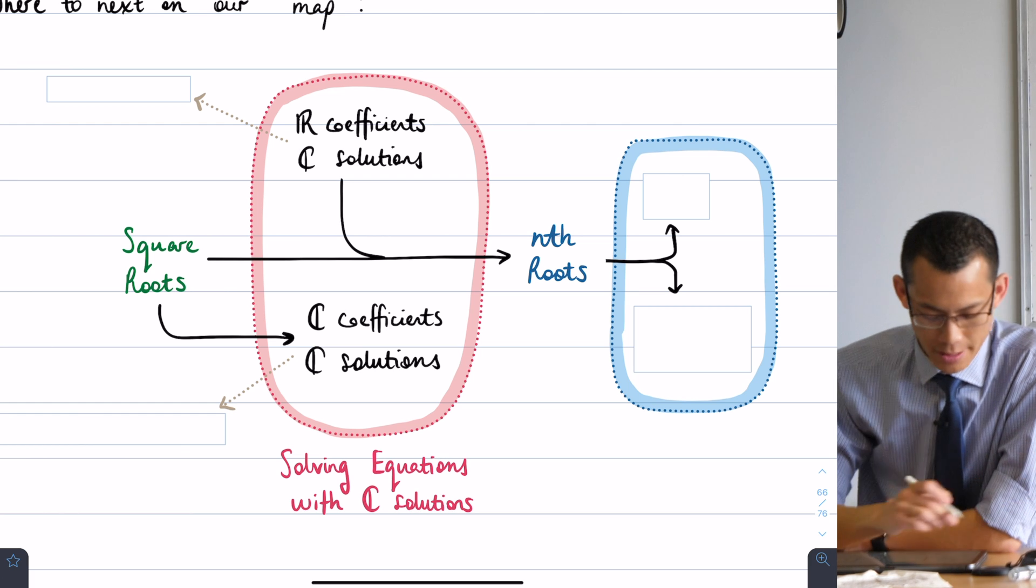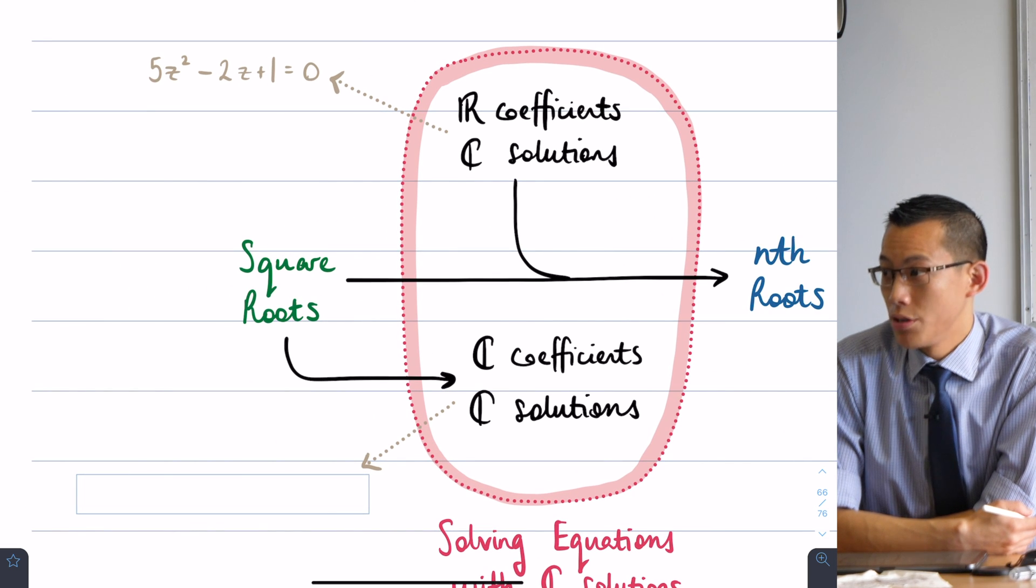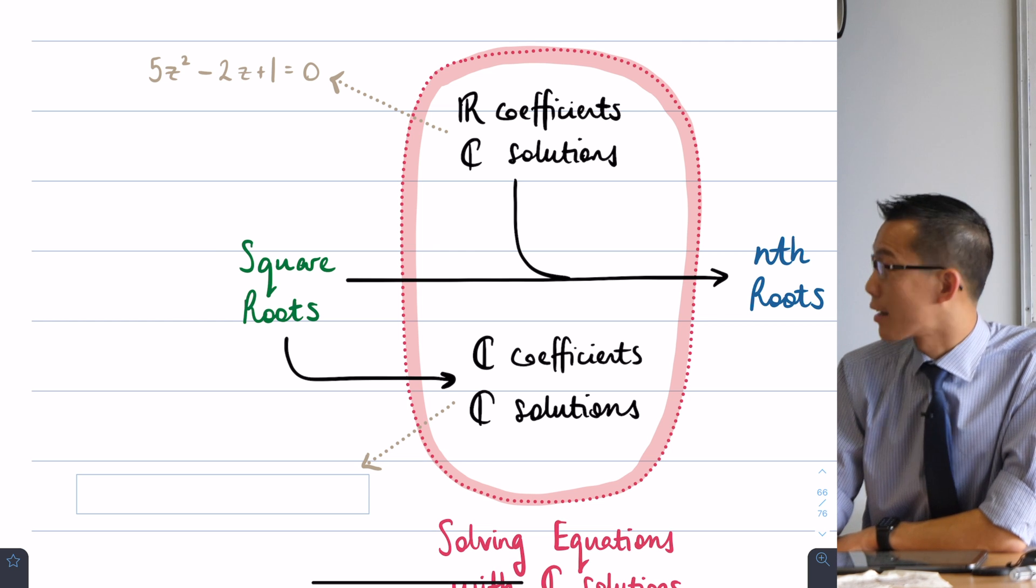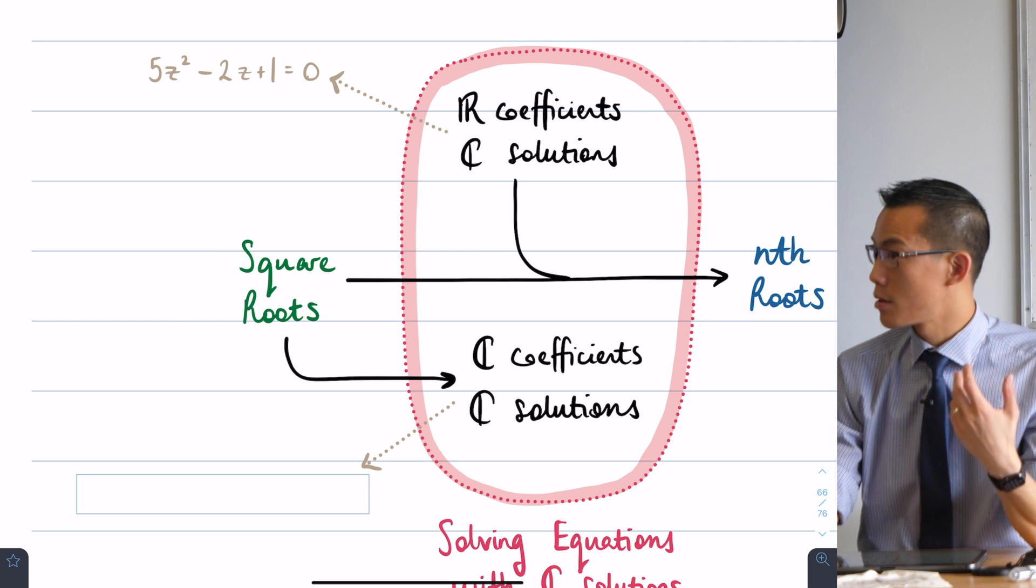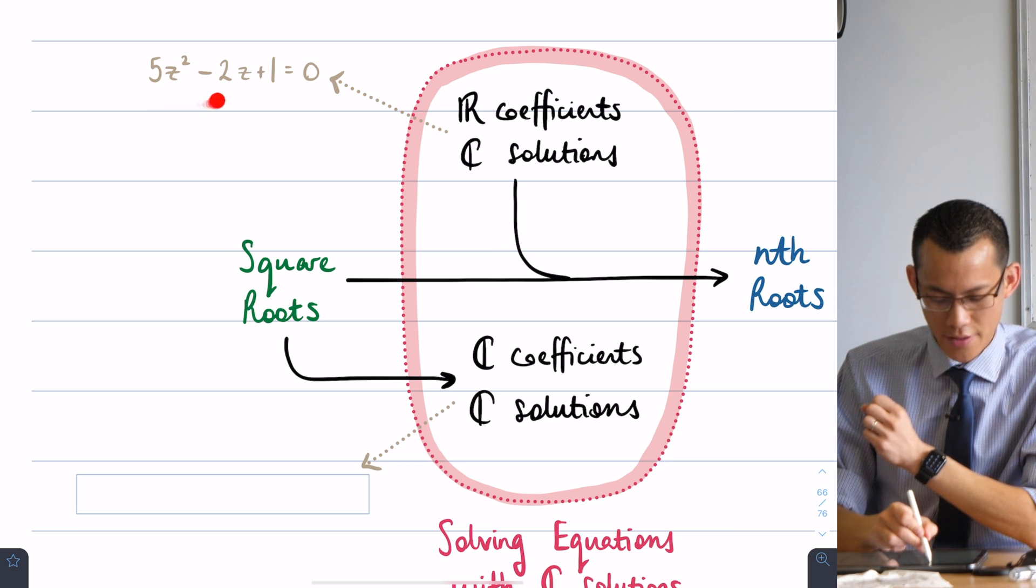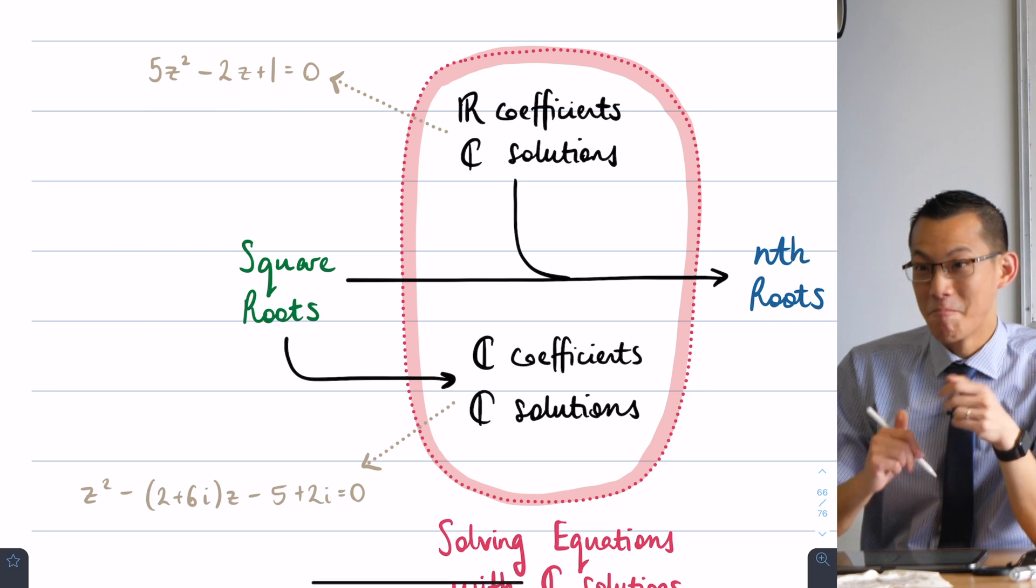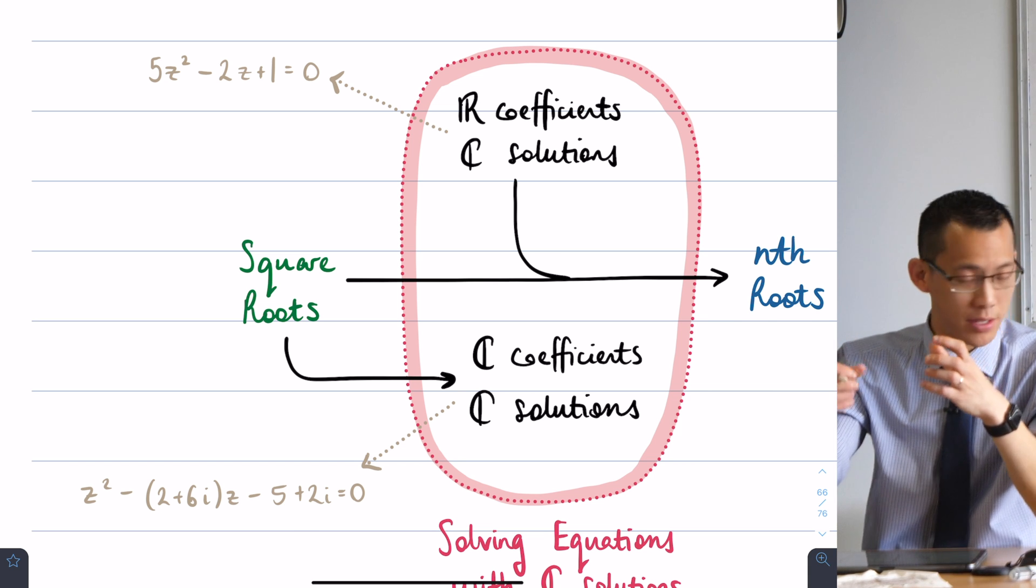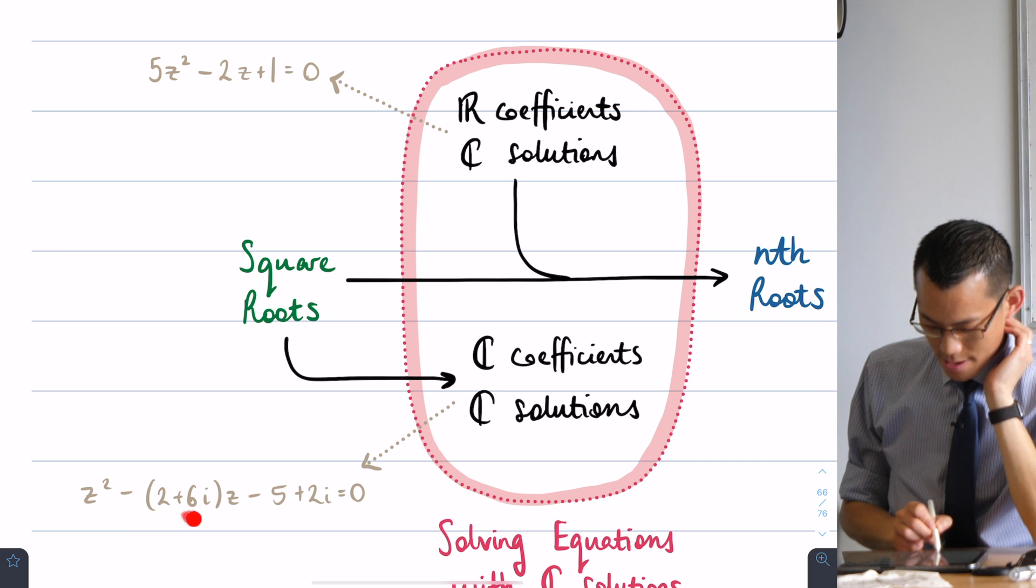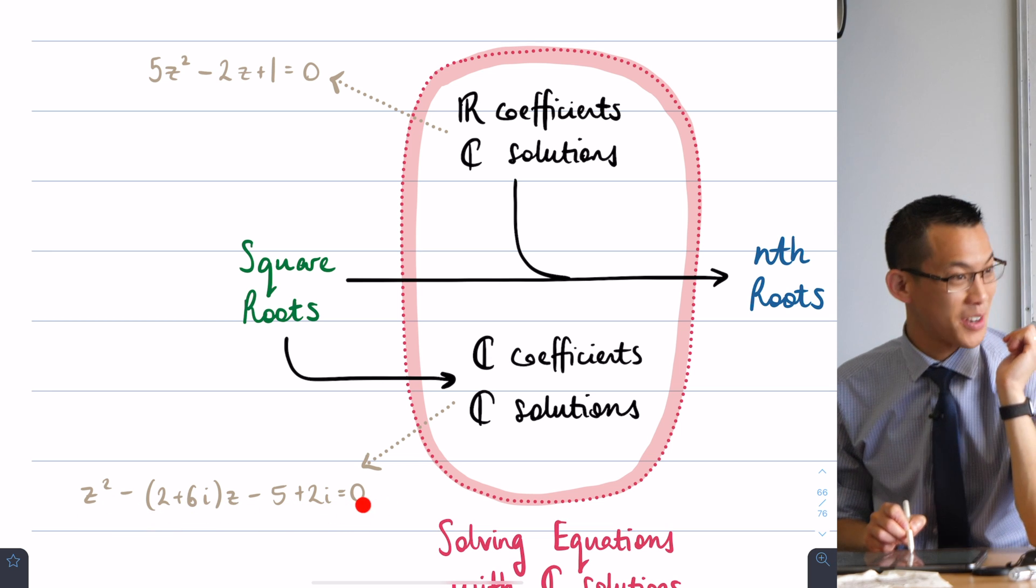This is very notation heavy, so it probably makes more sense if I give you an example. Here's an equation where all the coefficients are real: five, negative two, and one, just real numbers. But when we solve this, we're going to find that the solutions are complex. What does an equation look like when it has complex coefficients? Instead of numbers like five and negative two and one, we put in things with imaginary units and real units together. Our a here will be one, our b will be negative outside of two plus six i, and then our c will be minus five plus two i.